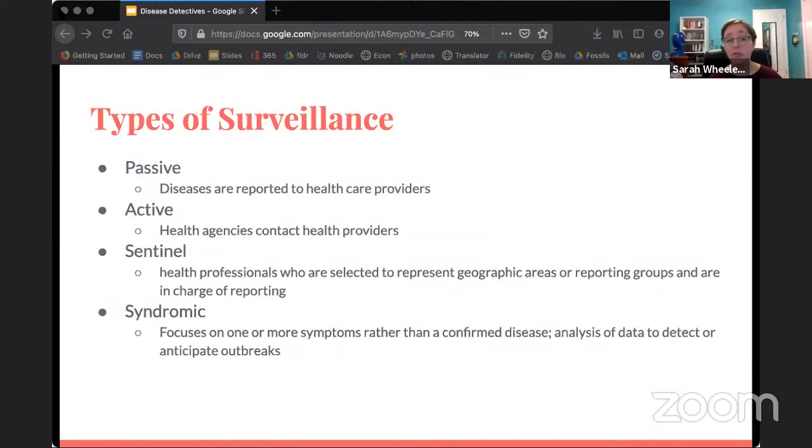One important thing to know in this event is the different types of surveillance. There are basically these four main ones. There's passive surveillance, which is diseases are reported by healthcare providers to health agencies because the health agencies aren't actually doing anything, that's why it's passive. Active is when the health agencies actively contact health providers to get information about the patients they've been treating. Sentinel is when specific health professionals are selected to represent their area or their reporting groups, and they're in charge of reporting. Sometimes there will be specific things that they want as in syndromic, which focuses on one or more symptoms rather than a confirmed disease, and it includes analysis of data to detect or anticipate outbreaks. It can take pretty much any of the other three forms.